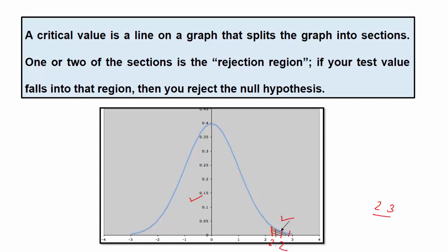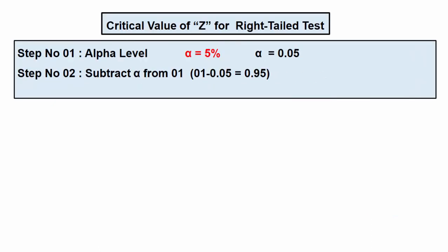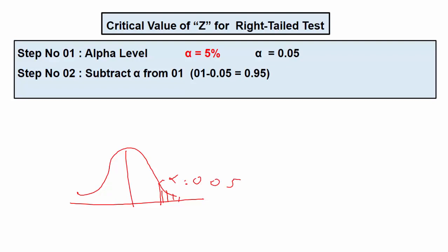Now the next question is how to find out this critical value. In the first example, the researcher wants to identify the Z critical value for a right tail test, and the given significant level, that is alpha, is 5%. Right tail test means the critical value will be situated at the right side, at the right corner of the distribution curve. Here alpha is equal to 0.05. This region is the rejection region, represented by alpha, and the other region is the acceptance or fail-to-reject region, represented by 1 minus alpha. The next step is to subtract 0.05 from 1, so 1 minus 0.05 equals 0.95.